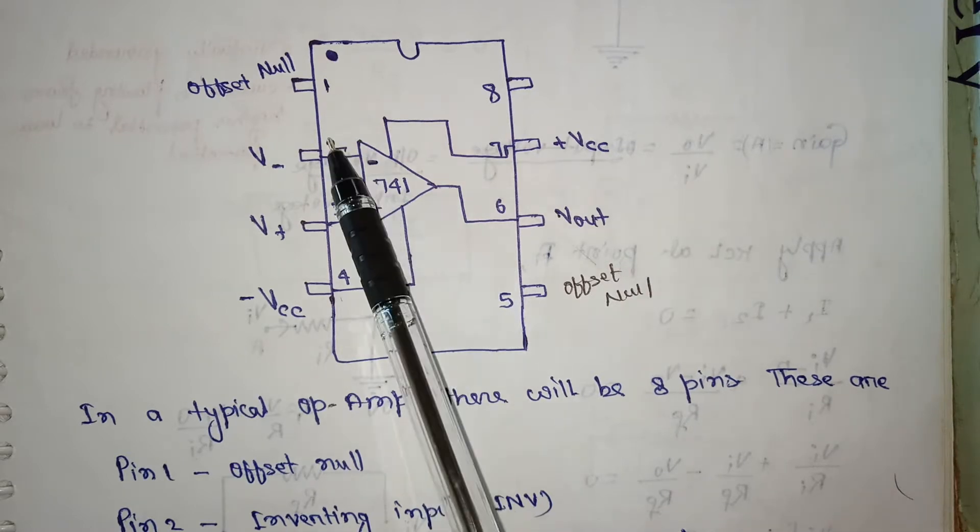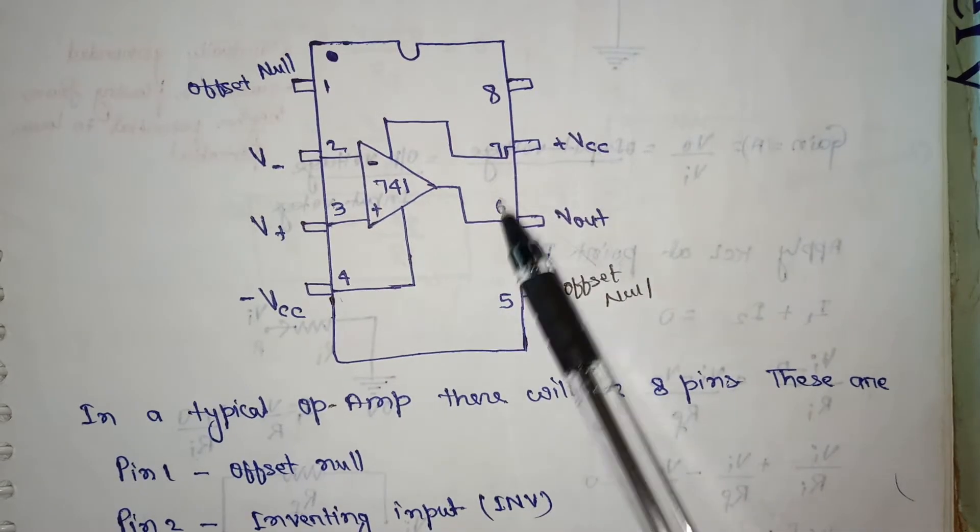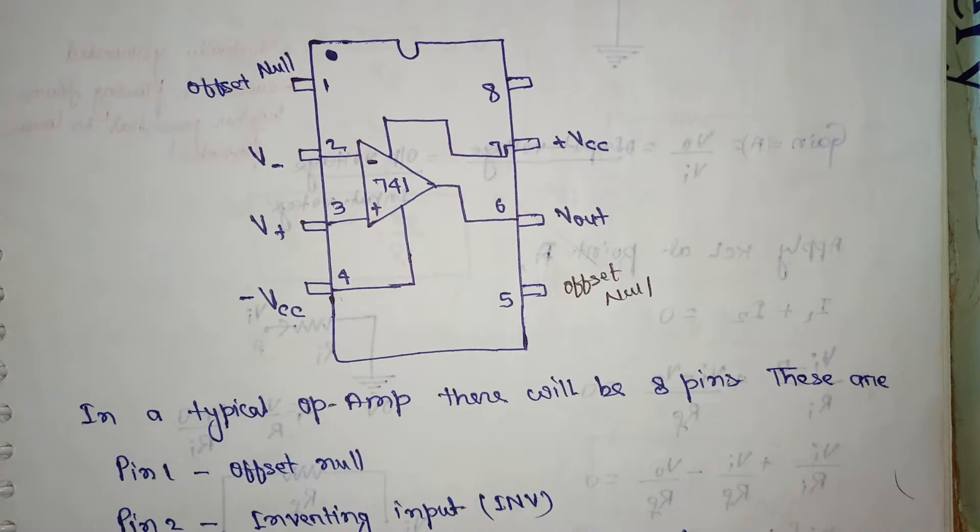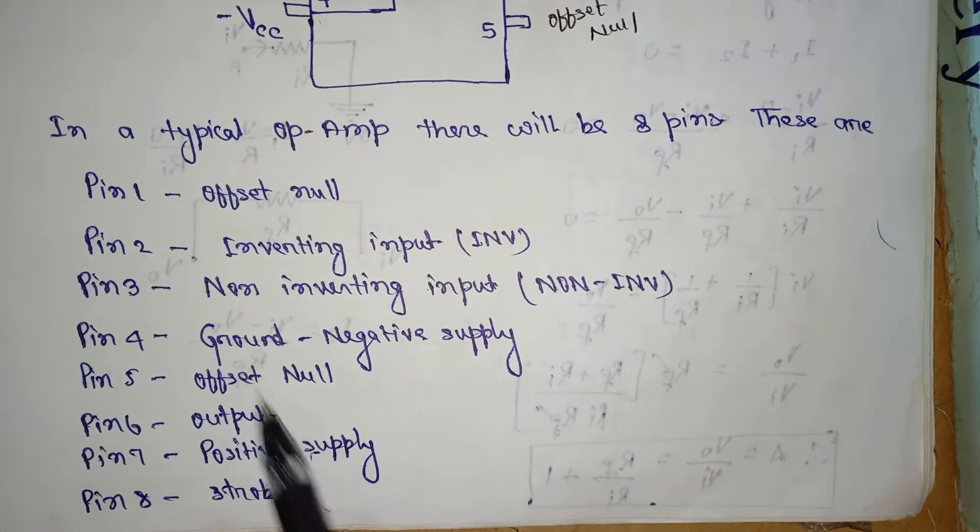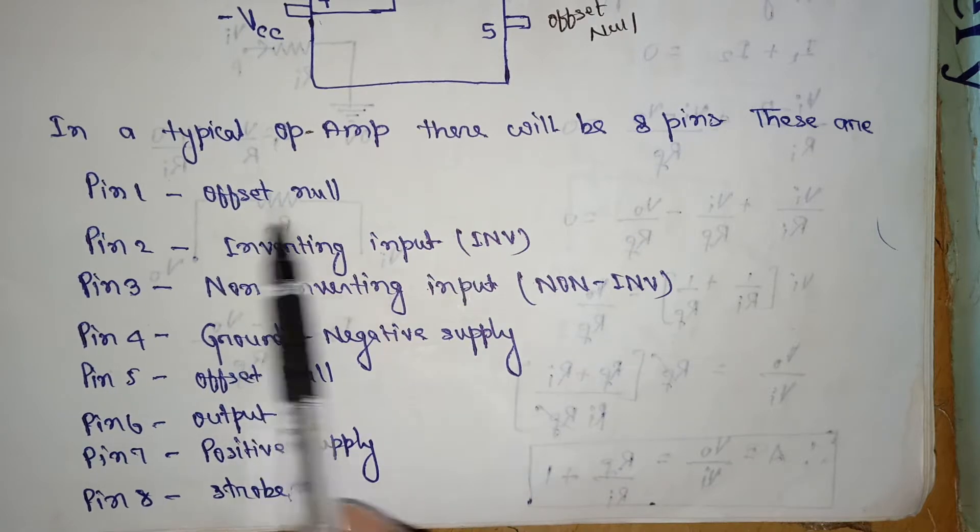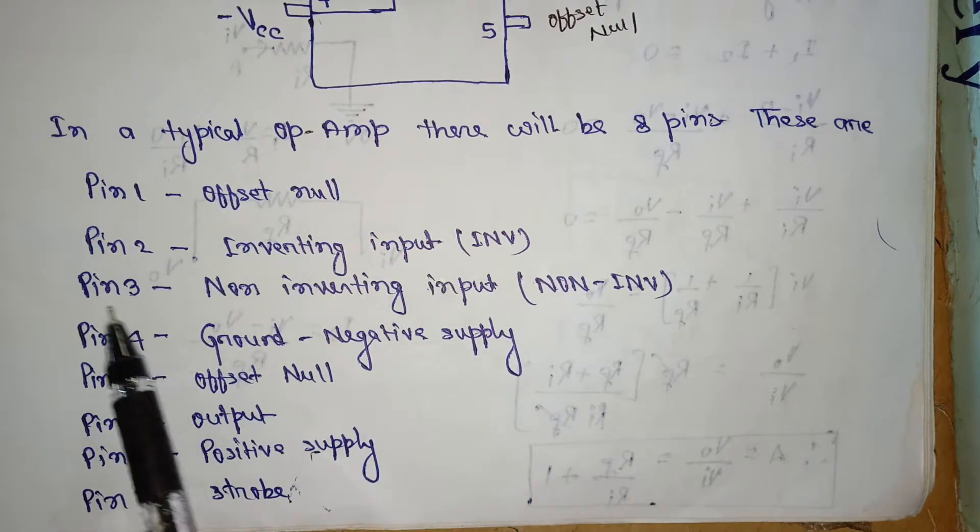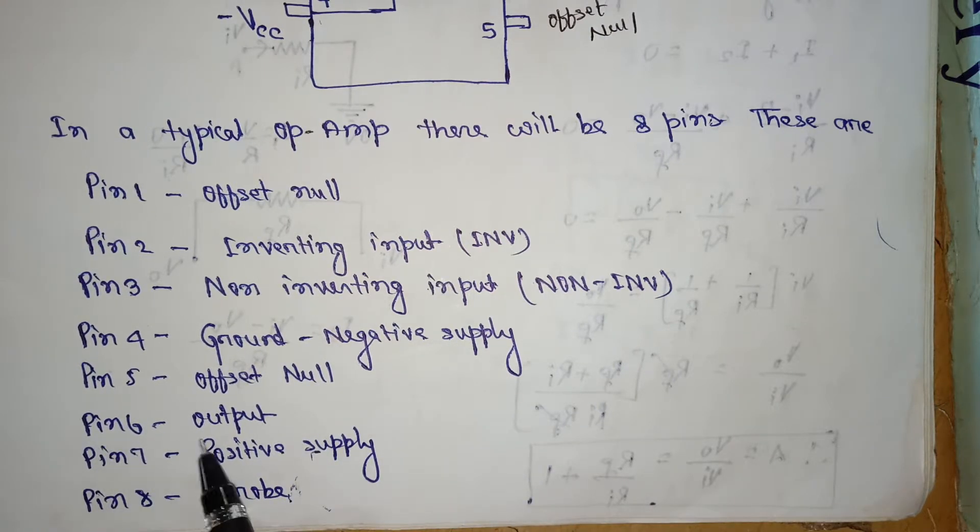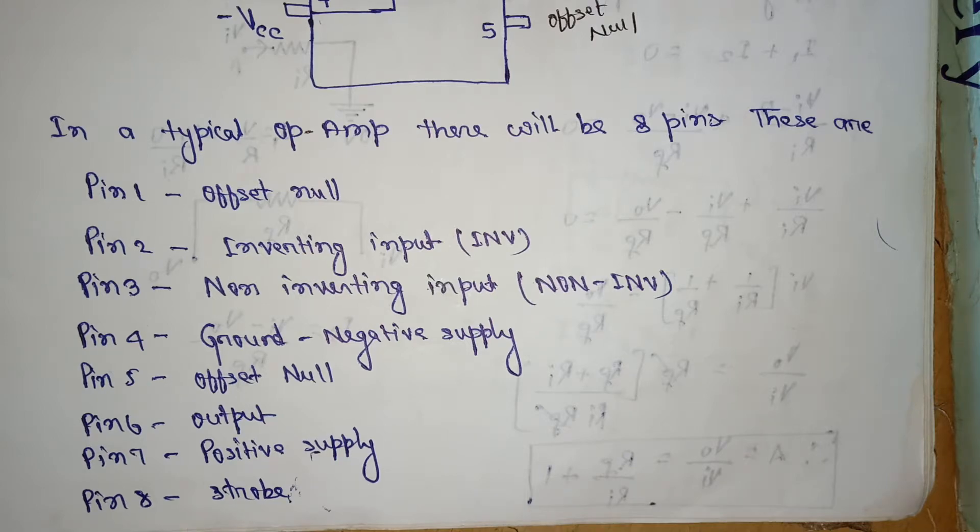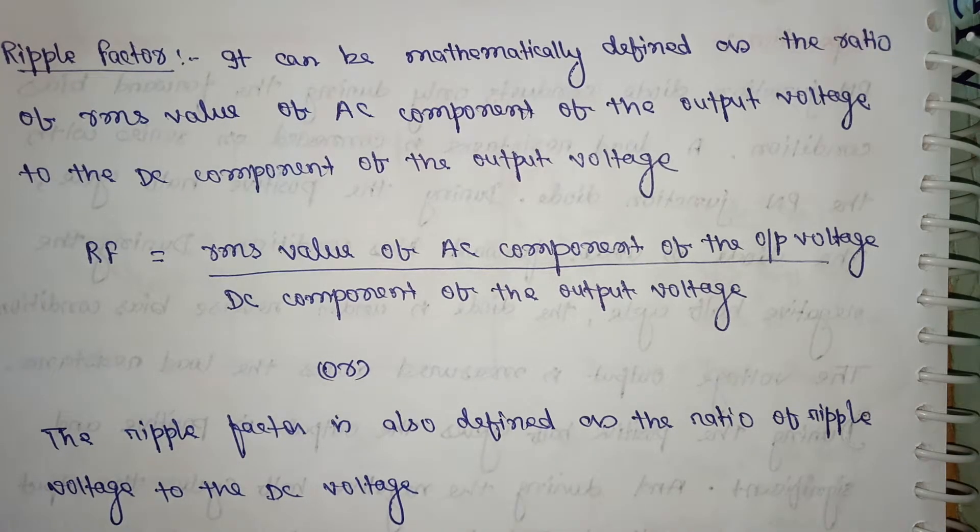Op-amp has 8 pins: pin 1 offset null, pin 2 inverting input, pin 3 non-inverting input, pin 4 ground negative supply, pin 5 offset null, pin 6 output, pin 7 positive supply, pin 8 strobe. Next, what is ripple factor?